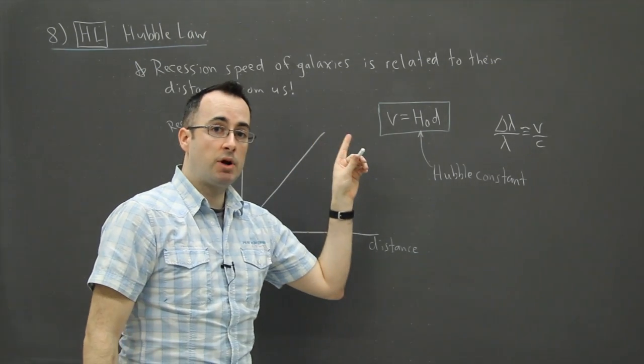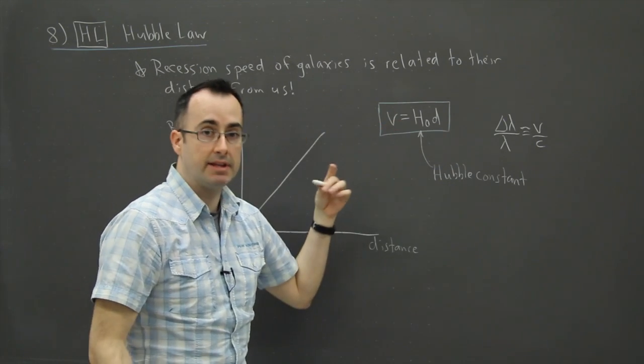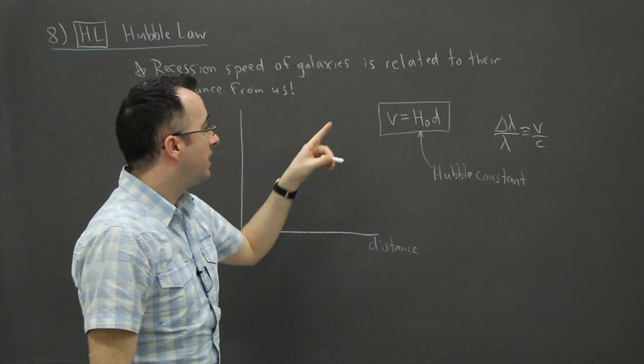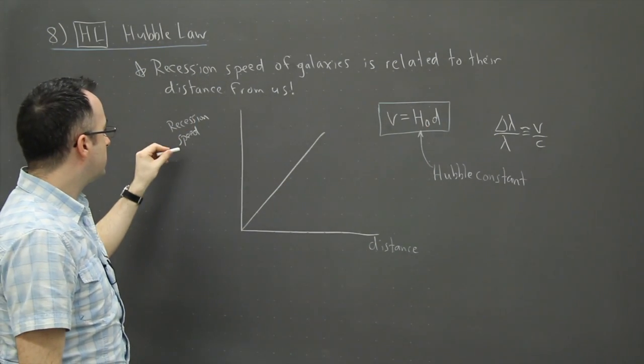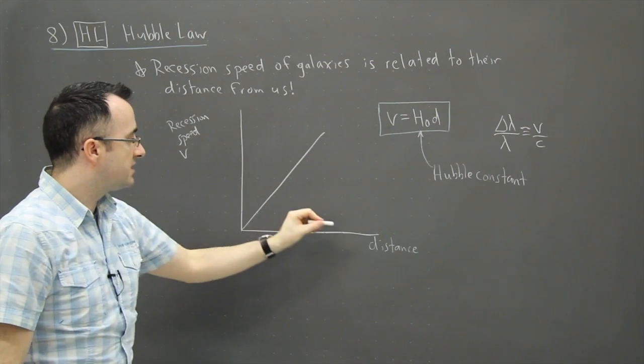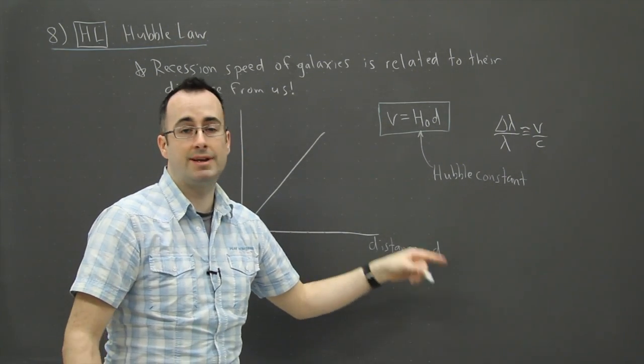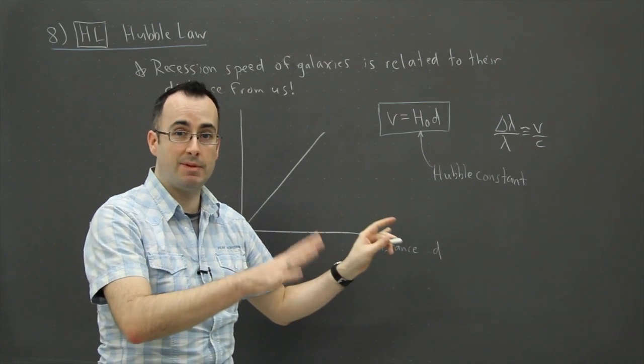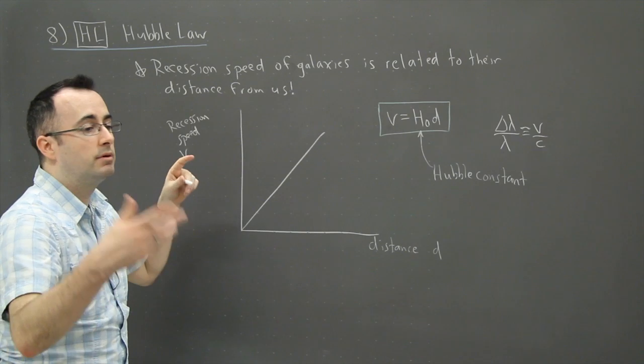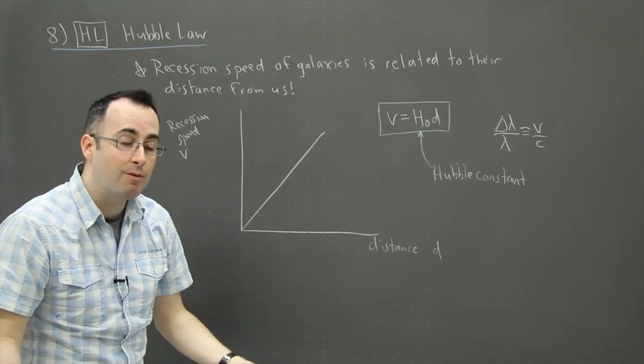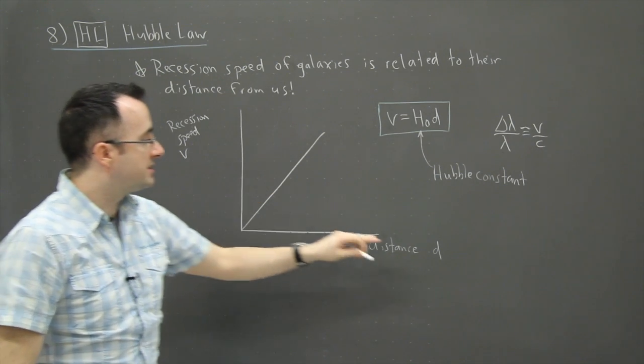Remember when we talked about linearization during the core videos? Here is an example of linearization going on. I've got a graph of V versus D. I've got recession speed V versus distance D. This could be in parsecs or megaparsecs or meters or light years. It doesn't matter. This could be in meters per second or kilometers per second or parsecs per fortnight. It doesn't matter what units you want to use. The key thing is though, we've got velocity versus distance.